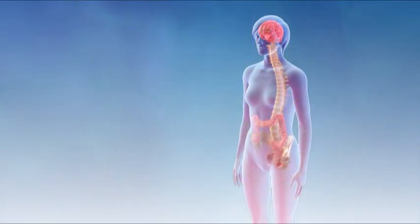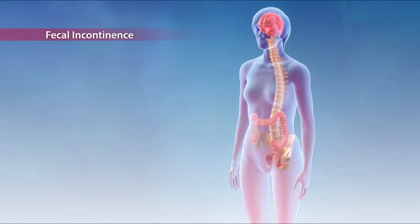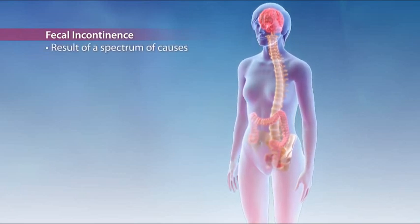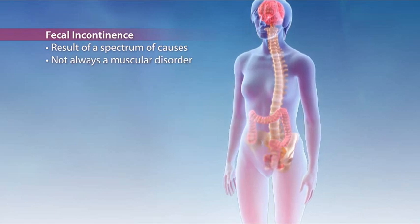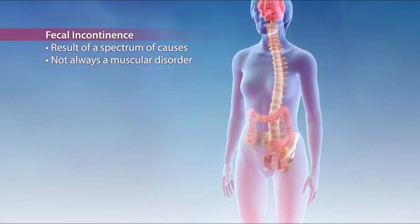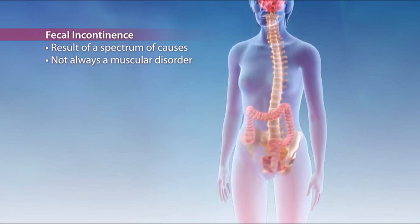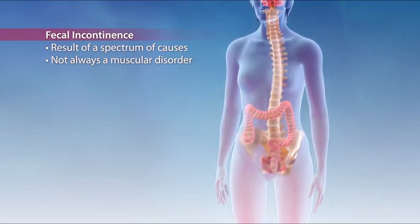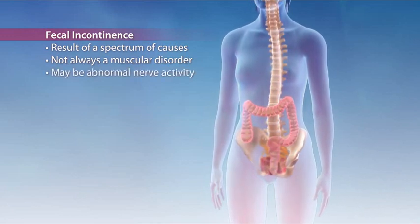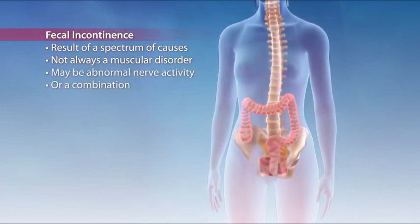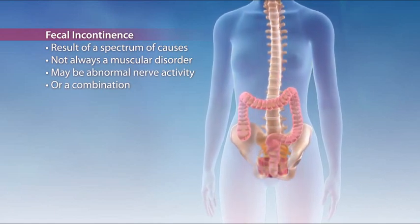Given the complex physiology of normal evacuation, fecal incontinence can be the result of a spectrum of causes. Commonly an acquired disorder, fecal incontinence could be due to structural causes such as trauma, or be of idiopathic or neuropathic origin. Rather than a muscular or structural disorder, one underlying factor may be abnormal nerve activity, which may affect the smooth and striated muscles used for bowel control.